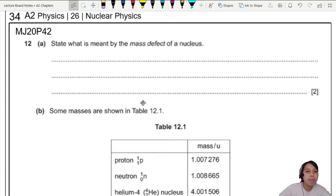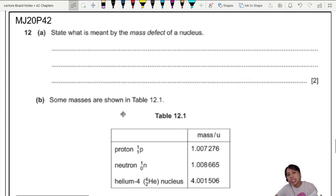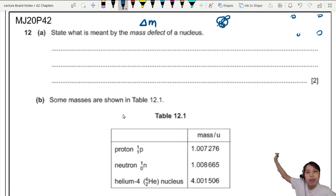Let's start off our nuclear journey with this past year MJ20 P42 question 12. State what is meant by the mass defect of a nucleus. So this mass defect, also known as delta M, it's a difference in mass for nucleus when they are separate versus when they are together in the nucleus. Let me redraw this thing again.